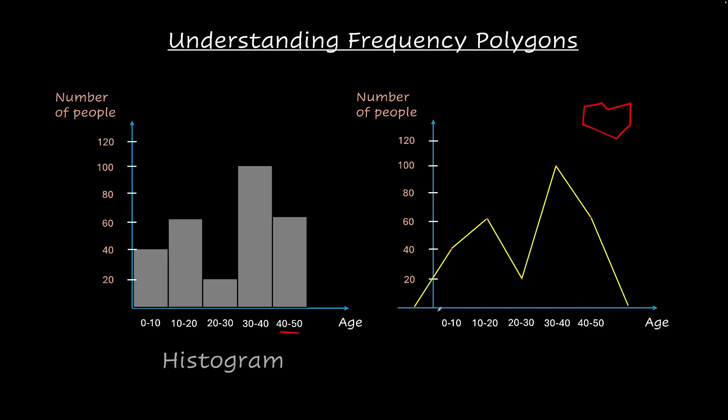And here, this is what we call as a frequency polygon. A polygon is a closed figure made up of multiple line segments, and that's exactly what this is here. So this is a closed figure, including the x-axis. Now, frequency is the number of times a value occurs. For example, here we have about 40 occurrences of people in the age groups of 0 to 10.